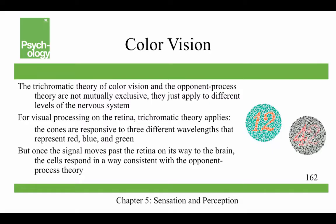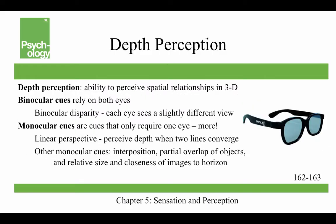If you see the number 12 and the number 42 in the color vision test, you are not colorblind.